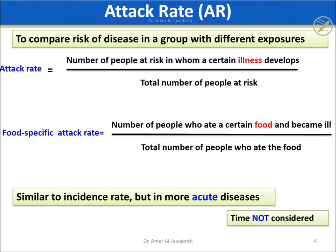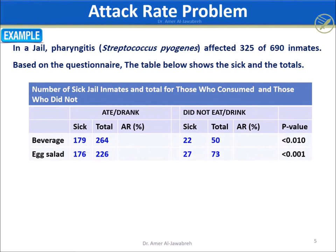In this foodborne outbreak problem among jail inmates, the investigators provided a table showing the number sick and total among those who ate or drank (exposed) and those who did not (unexposed).